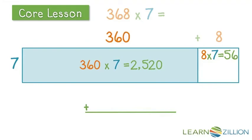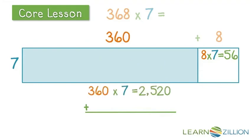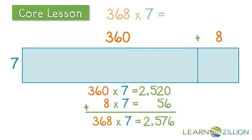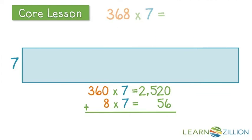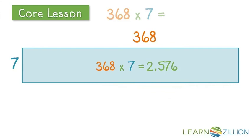Now, put back together our 7 groups of 360 with our 7 groups of 8. And what we're saying is that we have a total of 7 groups of 368 for a total of 2,576.